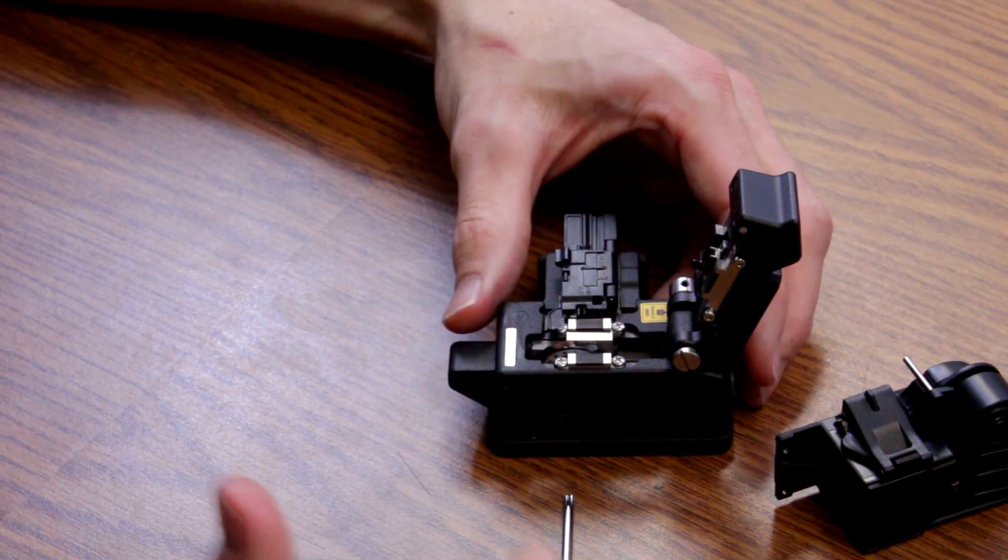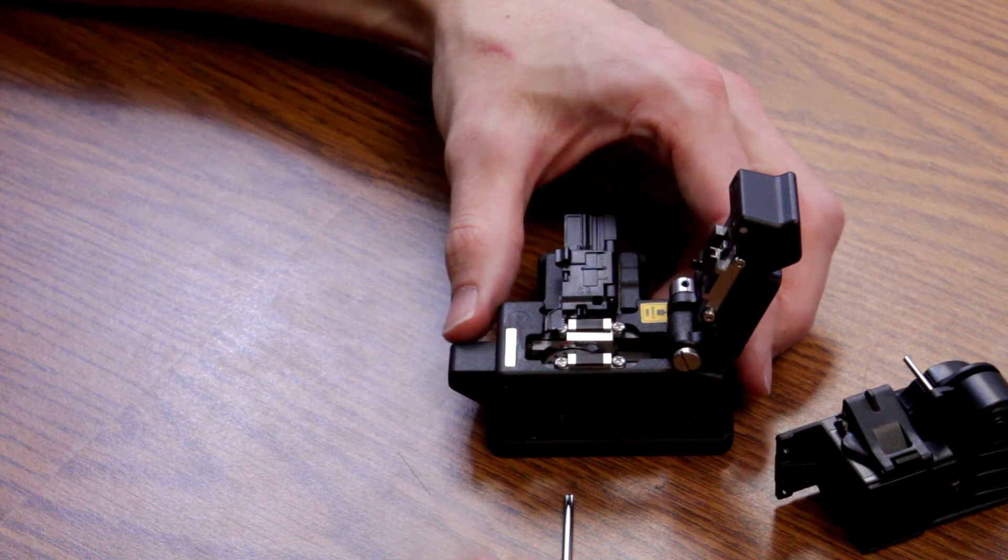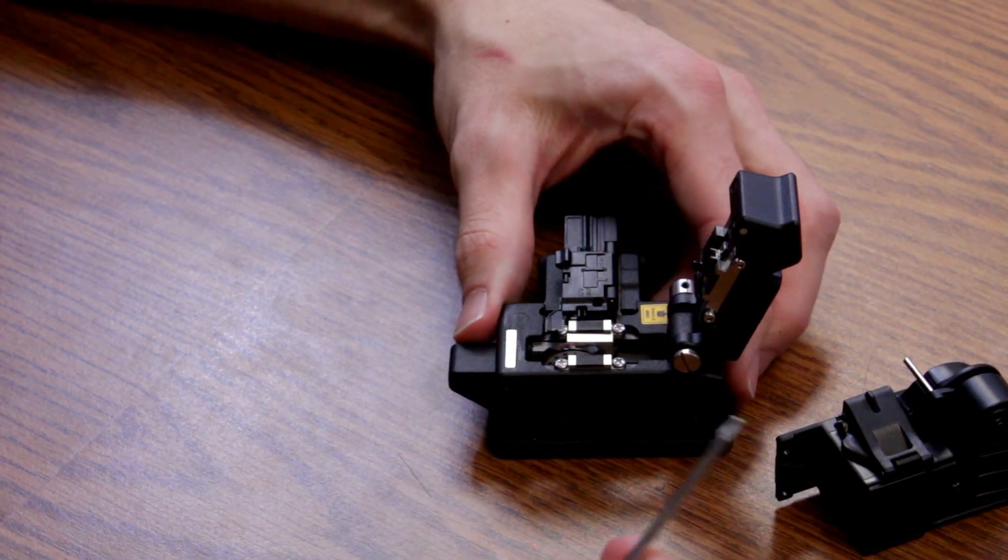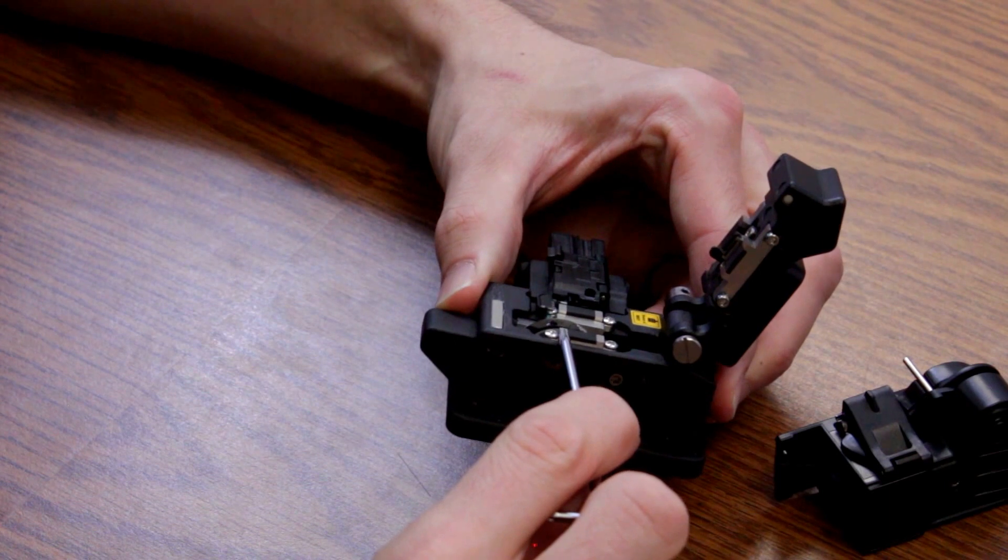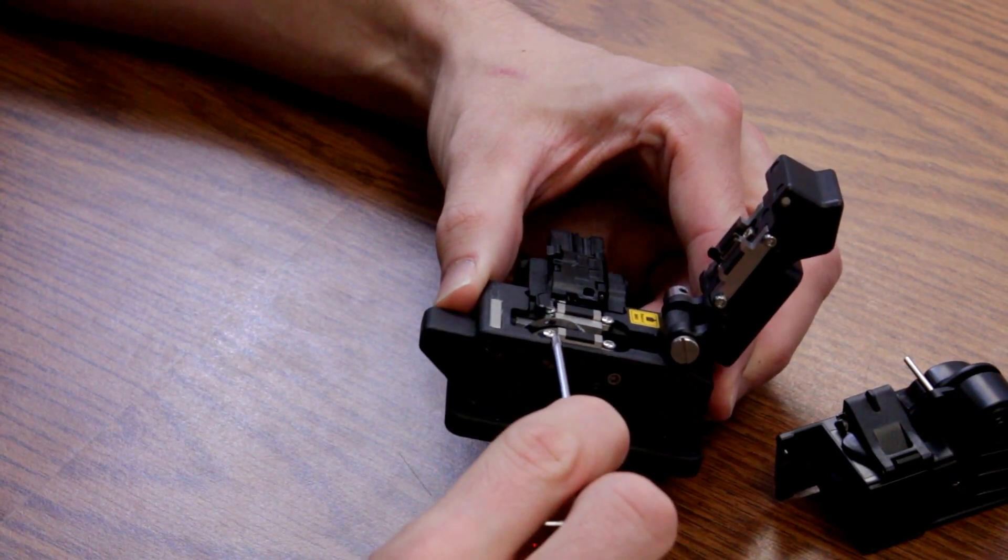So the next portion of taking care of your cleaver will be to rotate the blade. Now, to rotate the blade, each blade will come to you with numbers on the side labeling 1 all the way around to 16.